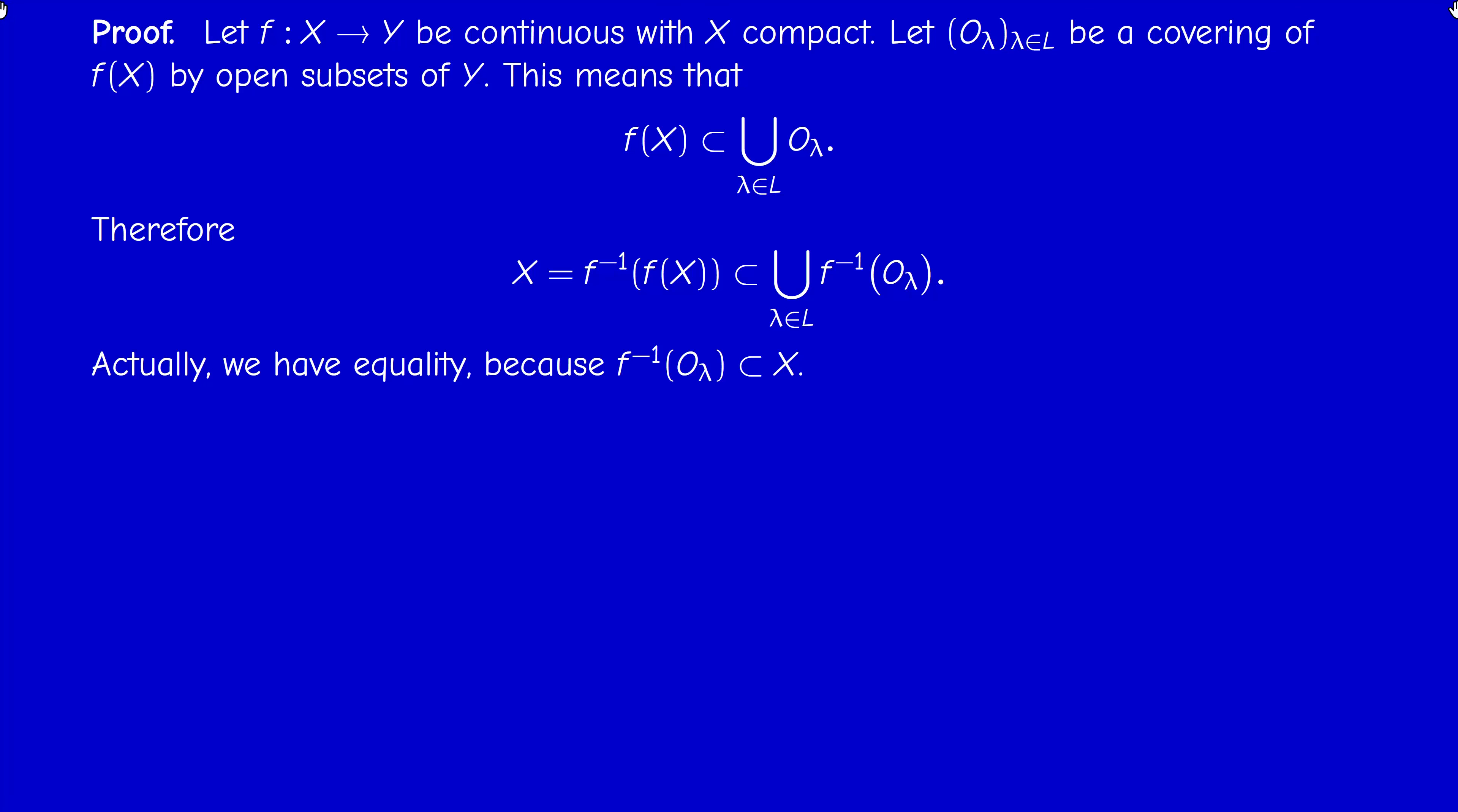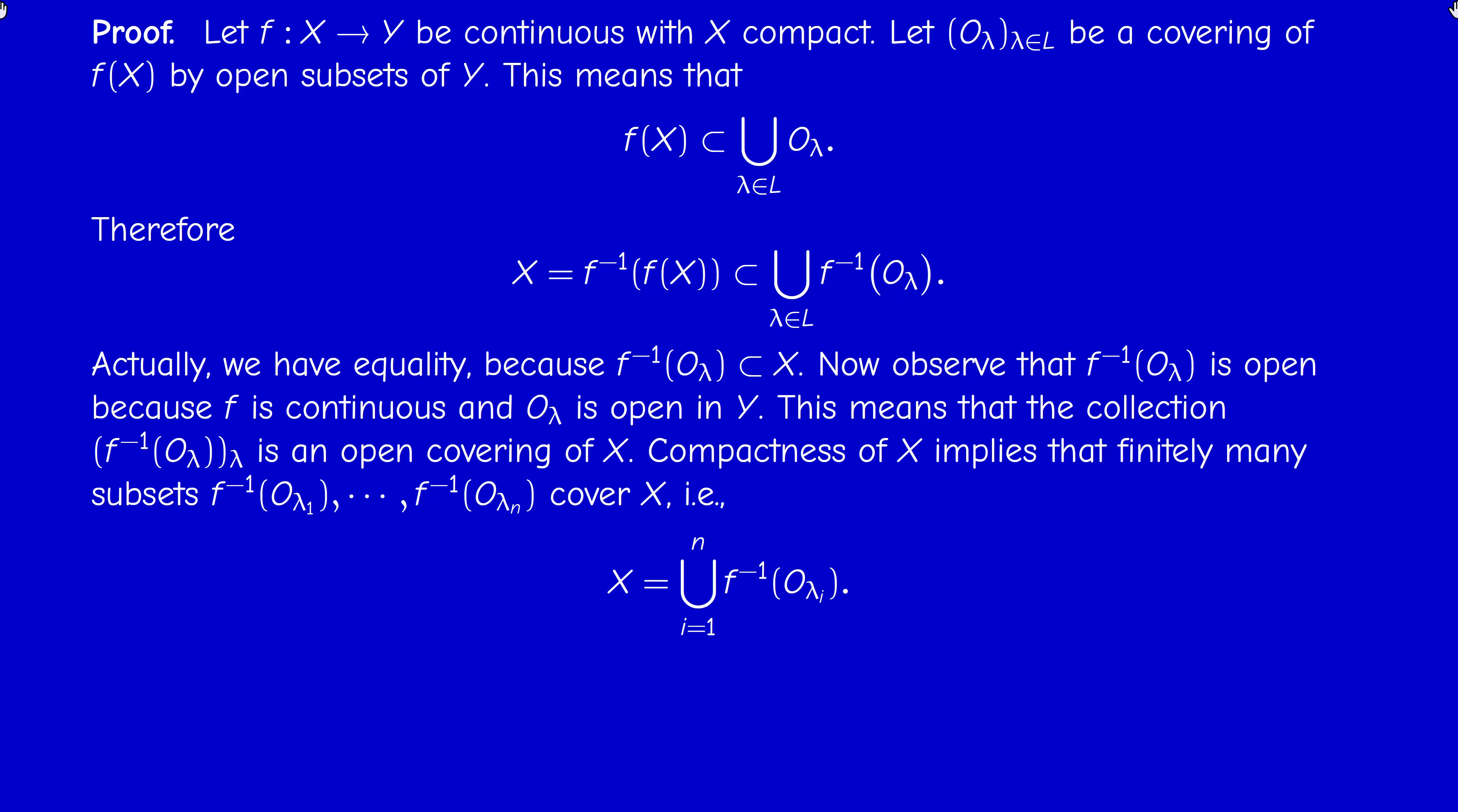I can interchange union and f^{-1}. So X is the union of f^{-1}(O_λ). And actually we have equality here because f^{-1}(O_λ) is contained in X. So we have a covering of X by open subsets of X. Now I use compactness. Why are these sets open? Because f is continuous.